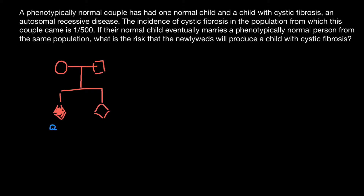If one child would be homozygous recessive, we can determine the genotype of the parents. Nothing is said that any of them is affected, so we assume they have a normal phenotype and would be heterozygous for this genetic disorder — having one dominant allele and one recessive allele. They are phenotypically normal but can have a child who is affected, as well as children who are unaffected.